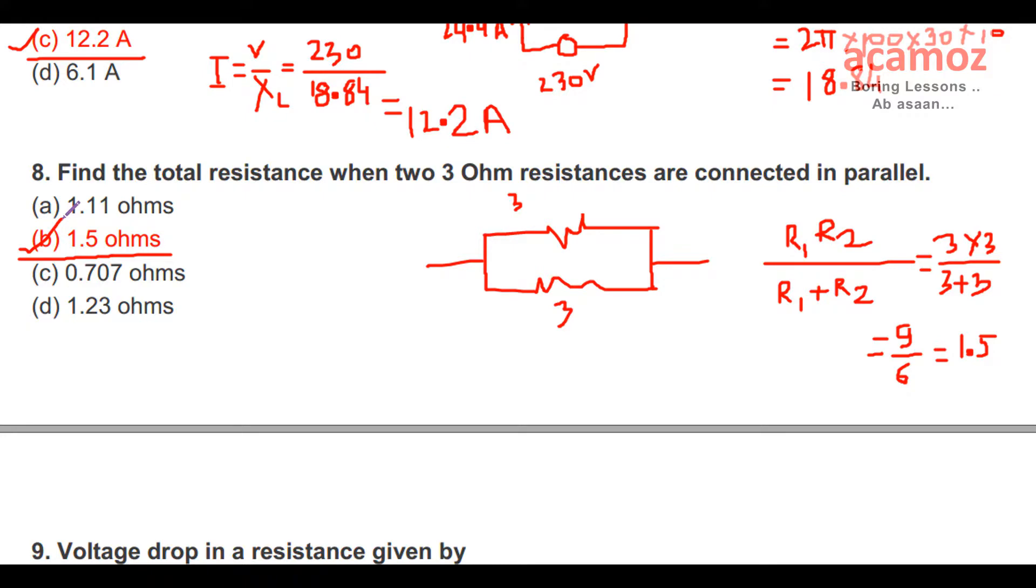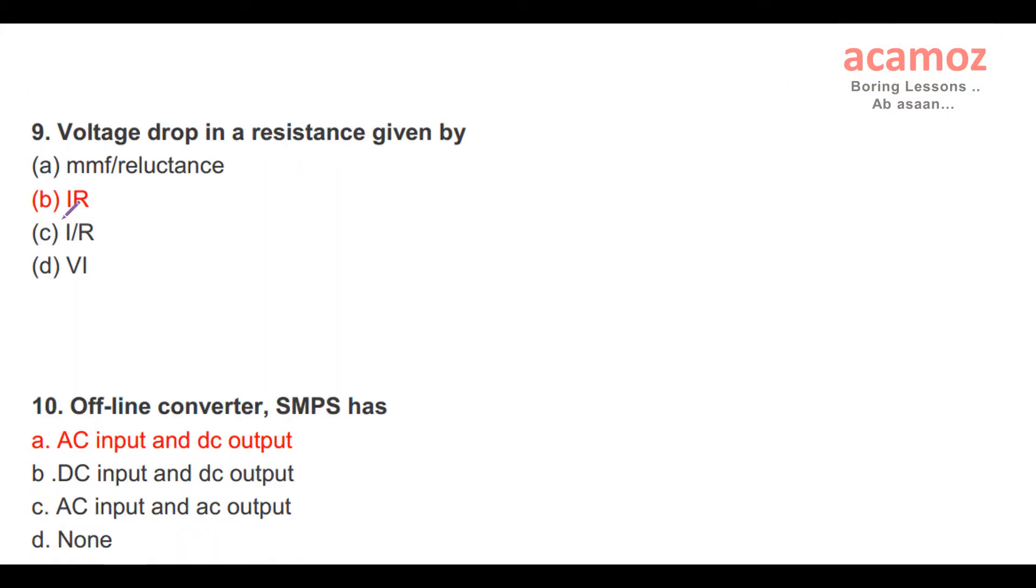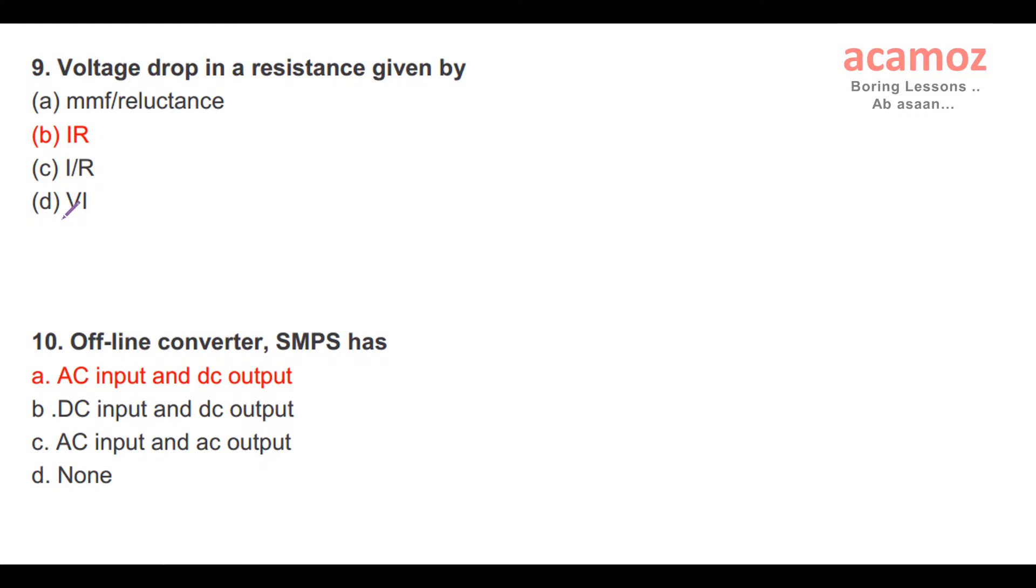Ninth question: Voltage drop in a resistance is given by? In any circuit, the voltage drop across a resistance is equal to V = IR. The answer is IR.